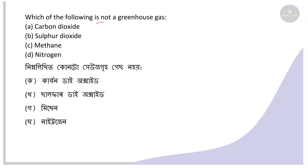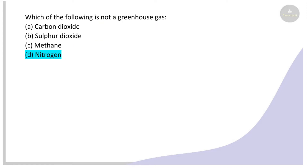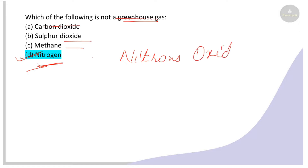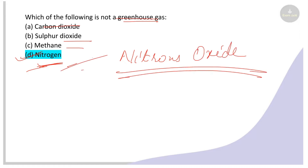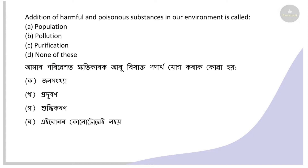Next: Which of the following is NOT a greenhouse gas? Options: carbon dioxide, sulfur dioxide, methane, nitrogen. The right answer is nitrogen. Carbon dioxide, methane, and nitrous oxide are greenhouse gases, but nitrogen is not. Note: nitrous oxide is a greenhouse gas, but nitrogen itself is not.